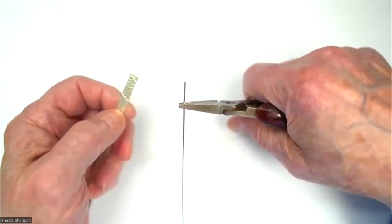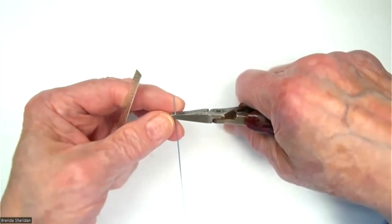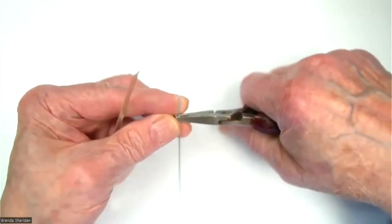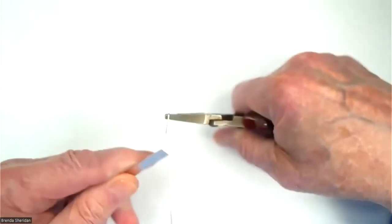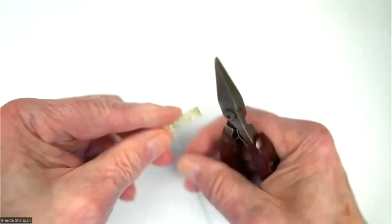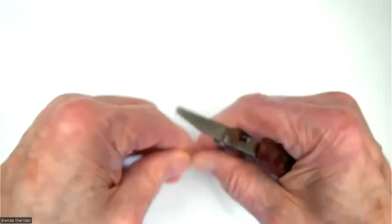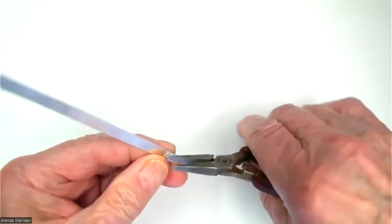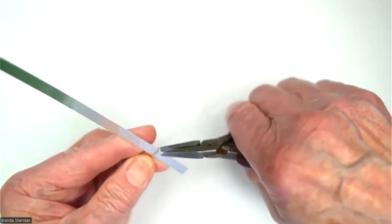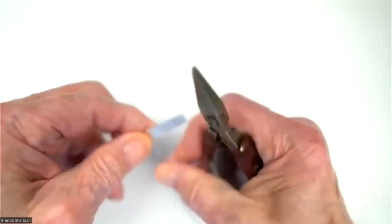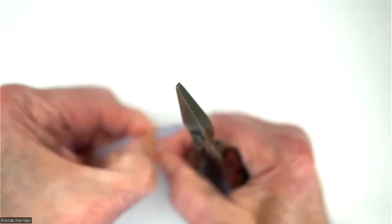You take and bend this over like this, over to the left a little bit. You put it on the pattern wire and squeeze it down on there like this.